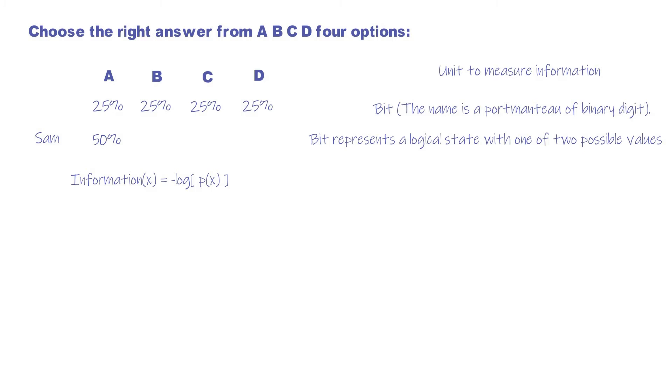Where log is the base 2 logarithm and P(x) is the probability of the event x. By the way, the choice of the base 2 logarithm means that the unit of information measured is in bit.